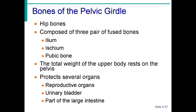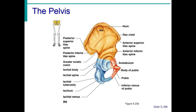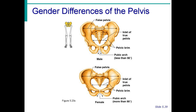The pelvic girdle is divided into three fused bones and is paired: the ilium, the ischium, and the pubic bone. It is also called the hip bones. The male pelvis is usually larger and more massive, but the female pelvis tends to be broader with a greater subpubic angle. This increase in the size of the pelvic opening helps accommodate the fetus during childbirth.